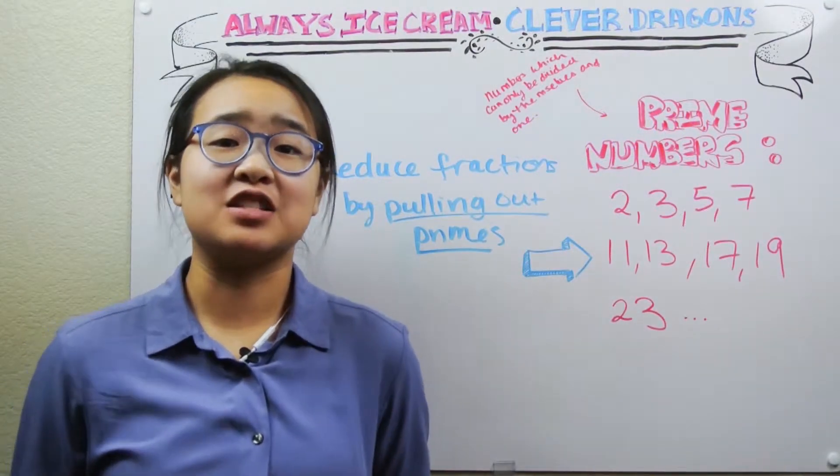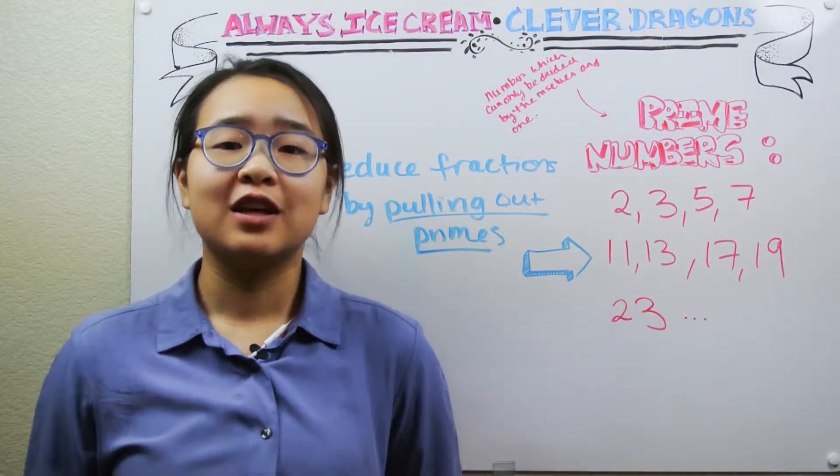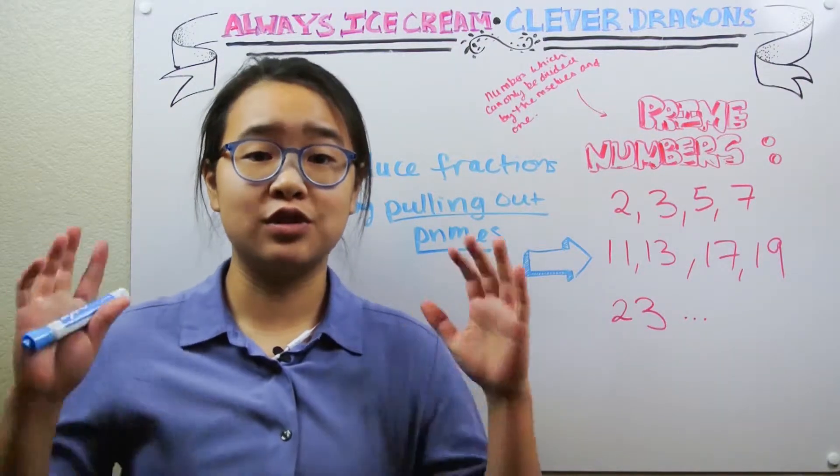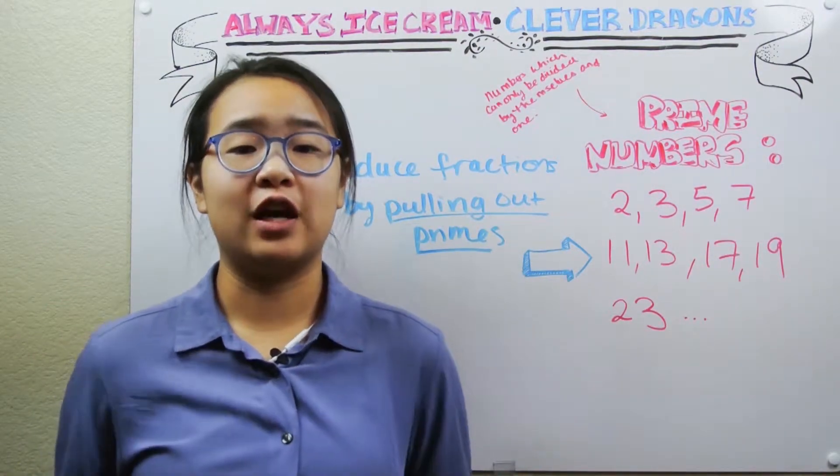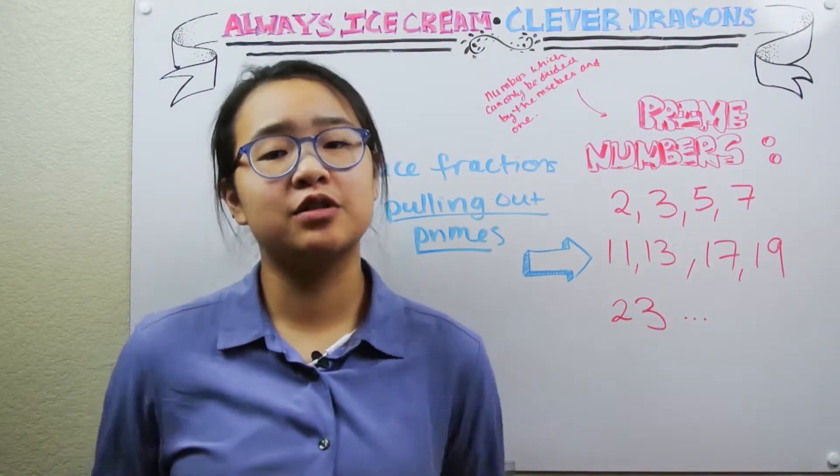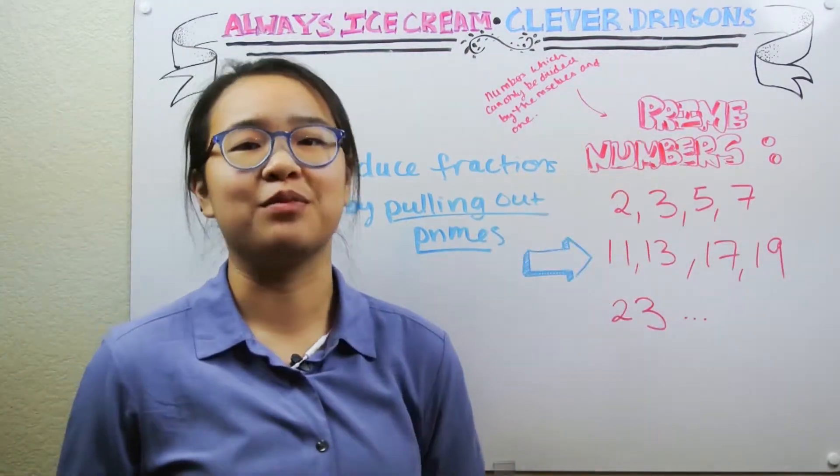So how do we get these fractions down to their lowest terms? In some of our previous videos, we've reduced fractions by dividing the numerator and denominator over and over again by two. But the proper way to reduce these fractions is by pulling out prime numbers.